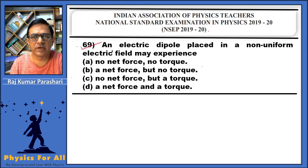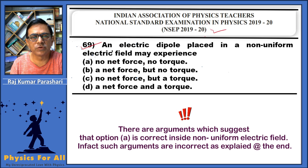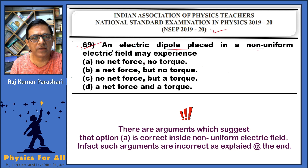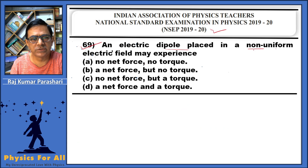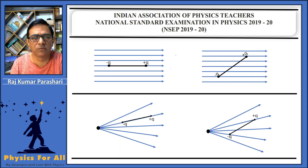Now, question number 69 of NSV 2019-20. It is a multiple correct option question. In this question, an electric dipole is placed inside a non-uniform electric field and we are supposed to find the various options which could possibly be correct. In the first option: no net force, no torque.